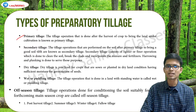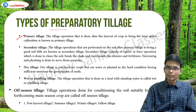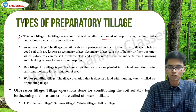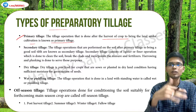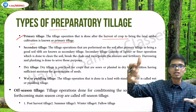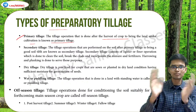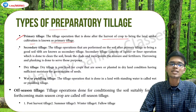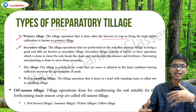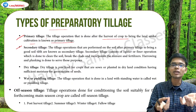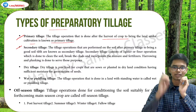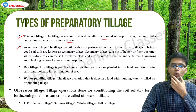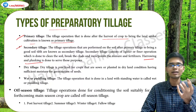Primary tillage is the tillage operation done after the harvest of a crop to bring the land under cultivation — it is the first step after harvesting to prepare the land for the next cropping season. Secondary tillage comes after primary tillage — it makes the tillage much more refined, helps clean up the soil, breaks up clods, and helps incorporate manure and fertilizers. Operations such as harrowing and planking are done during secondary tillage.